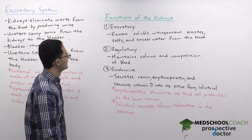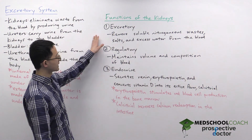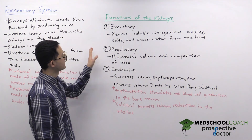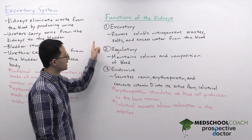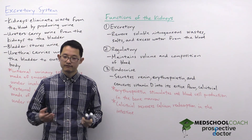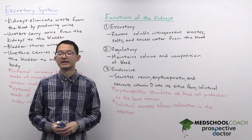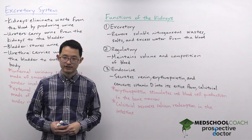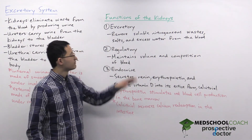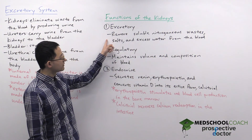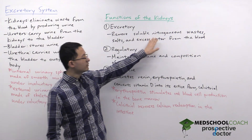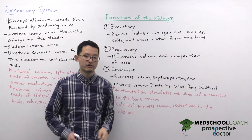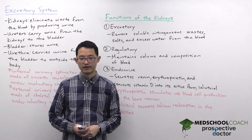The kidney has three main functions. The first is excretory — the kidney eliminates waste from the blood by producing urine. In particular, the kidney removes soluble nitrogenous wastes, salts, and excess water from the blood.